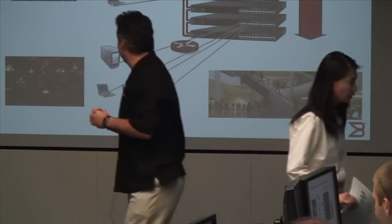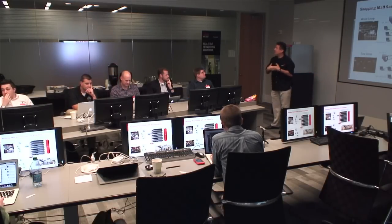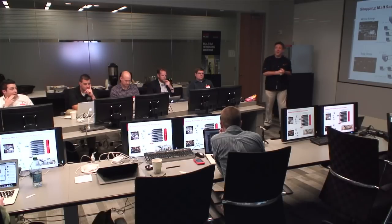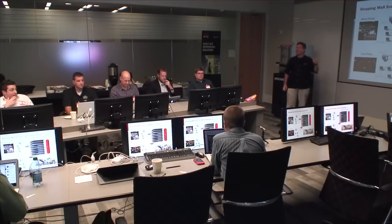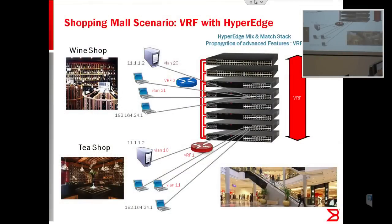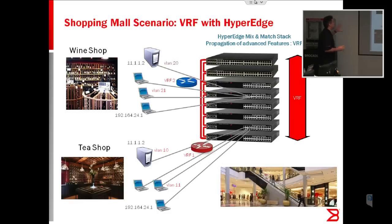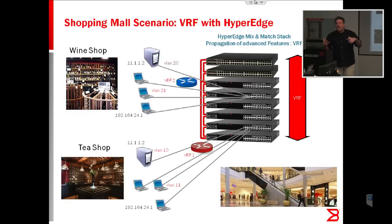The use case scenario I'm going to show is how we propagate the VRF feature through mix-and-match stacking. VRF is a pretty advanced layer-three feature that is only supported on high-end layer-three switches. Here we're going to be able to support VRF on entry-level switches such as the ICX 6450. I've put together a simple use case to explain the benefit of VRF and the value you get through mix-and-match stacking.